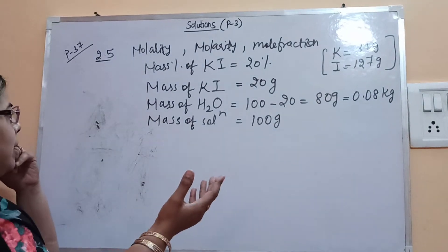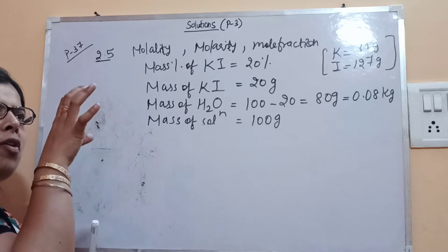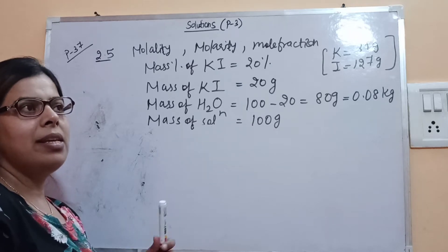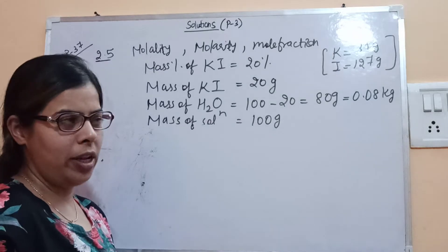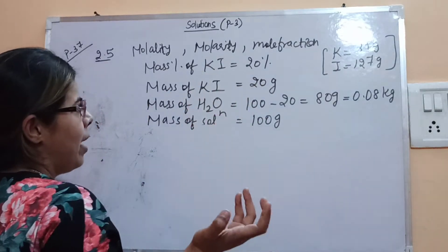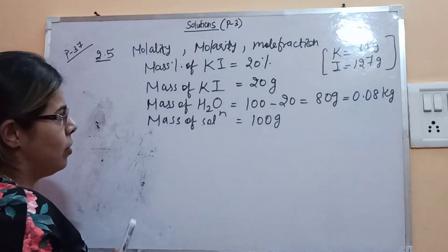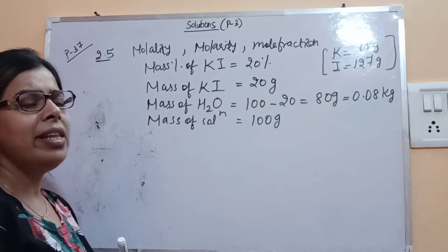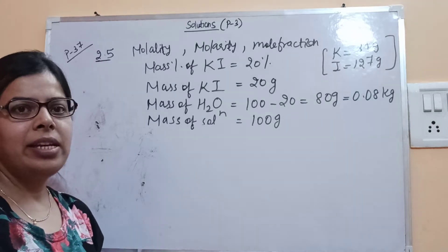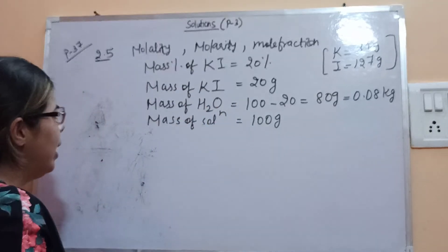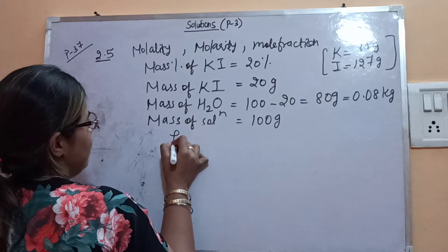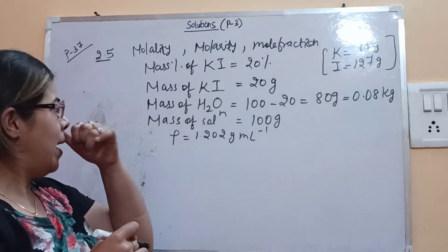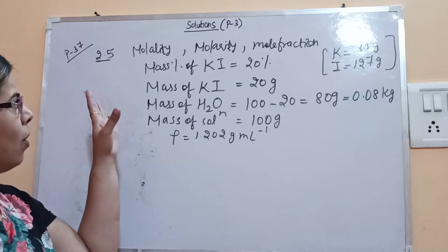Mass by mass means let's consider the total solution is 100 grams. So out of 100 grams, 20 grams is KI. Since it is an aqueous solution, the solvent is water. So mass of KI is 20 grams, and mass of water is 100 minus 20 = 80 grams, converted to 0.08 kg, because for molality we need mass of solvent in kg. One more thing given is density: 1.202 gram per mL.